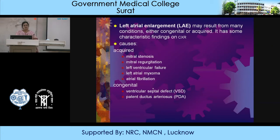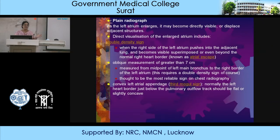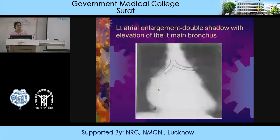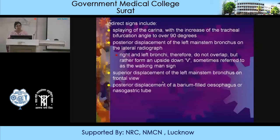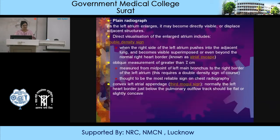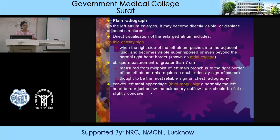How do you directly visualize an enlarged left atrium? By the double density sign — when the right side of the left atrium pushes into the adjacent lung and becomes visible, superimposed on or even beyond the normal heart border, it is known as atrial escape. An oblique measurement of greater than 7 cm, measured from the midpoint of the left main bronchus to the right border of the left atrium, is the most reliable sign on chest radiography. A convex left atrial appendage, known as the third mogul sign, is also significant — normally the left heart border just below the pulmonary outflow tract should be flat or slightly concave; if it is projecting outward, the left atrial appendage is enlarged.